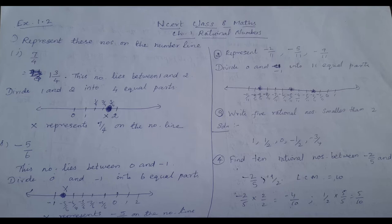So 7 by 4 — convert to mixed fraction: 1 and 3 by 4. So this number lies between 1 and 2. The denominator is 4, so divide between 1 and 2 into 4 equal parts. Draw a straight line with 0, 1, 2. Mark 4 equal parts. So 3 by 4 gives position: 1, 2, 3 — mark the 3rd part after 1.